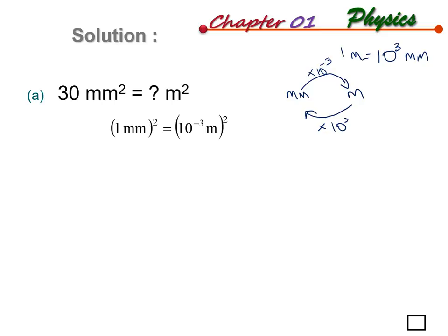But since the equation has square units - millimeter square and meter square - you have to include the square on the multiplier as well. Using the mathematical rule: (a^m)^n = a^(mn), so 10 to the power of negative 3, when squared, becomes 10 to the power of negative 6.